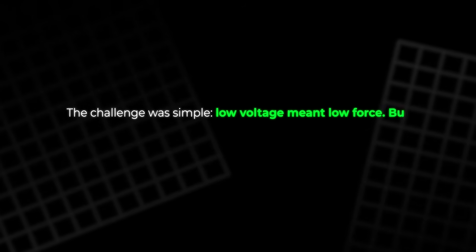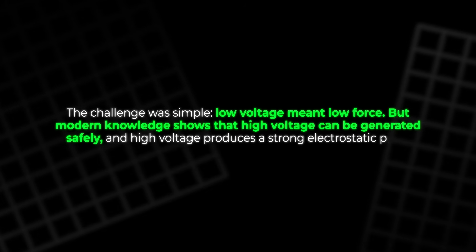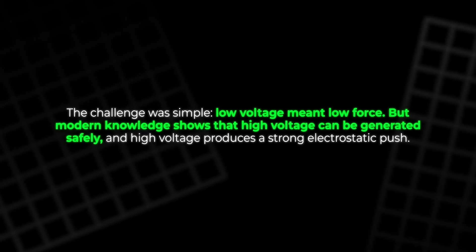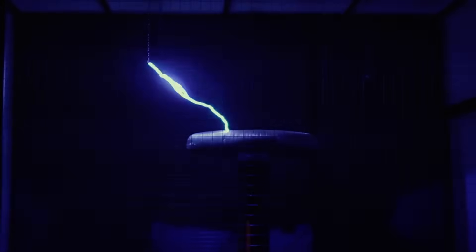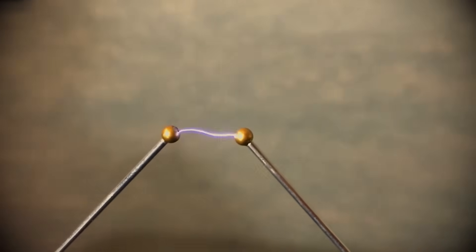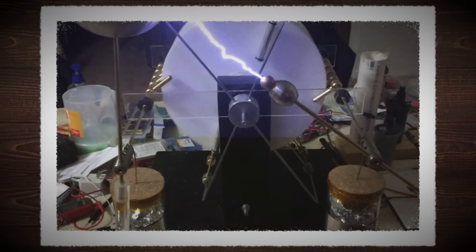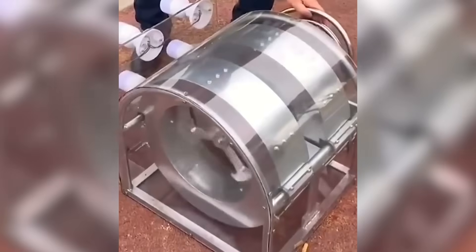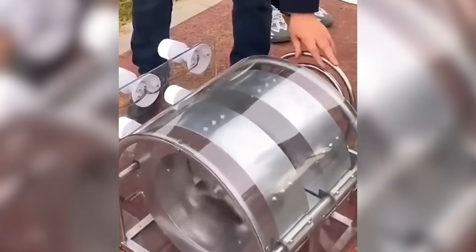The challenge was simple. Low voltage meant low force. But modern knowledge shows that high voltage can be generated safely, and high voltage produces a strong electrostatic push. High voltage does not automatically mean high danger if the current remains extremely small. A device can hold thousands of volts and microamps at the same time. The voltage gives the push. The microamps make it safe. With this understanding, the new atmospheric motor was created.